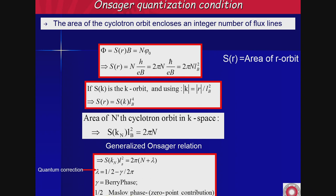This is a semi-classical relation and misses some quantum mechanics. The full correction replaces n with n + λ, where λ has two terms: a one-half (the Maslov phase, analogous to zero-point motion in the harmonic oscillator) and the Berry phase γ divided by 2π. So the generalized Onsager relation is: S_k · ℓ_B² = 2π(n + 1/2 + γ/2π).